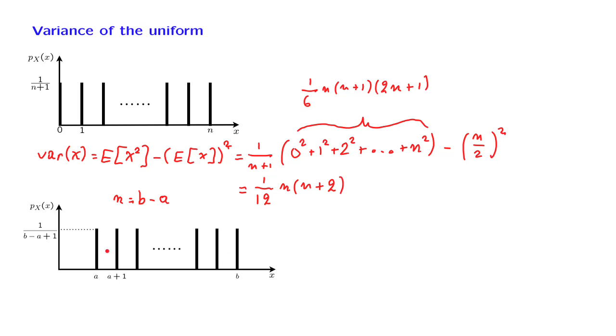So this shifted PMF is the PMF associated to a random variable equal to the original random variable plus a constant. But we know that adding a constant does not change the variance. Therefore, the variance of this PMF is going to be the same as the variance of the original PMF, as long as we make the correspondence that n equals b minus a.